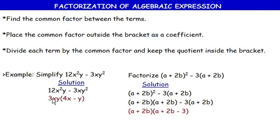For the variable aspect: we have x² and x — the common factor is x, because x can divide itself and can also divide x². For y, we have y and y² — the common factor is y, because y can divide itself and y².